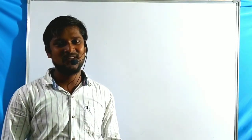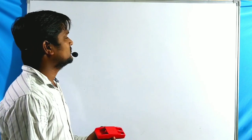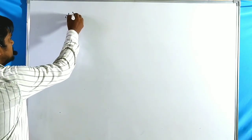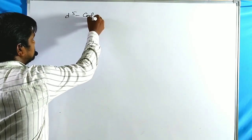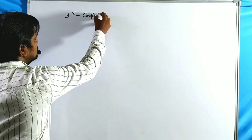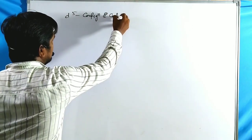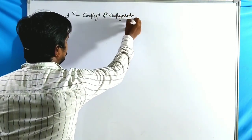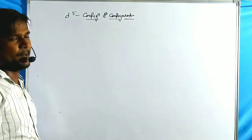Hi guys, welcome to RPB Resonance Chemistry. Now we are discussing the d⁵ configuration electronic transition — this is the last topic in Orgel diagrams.